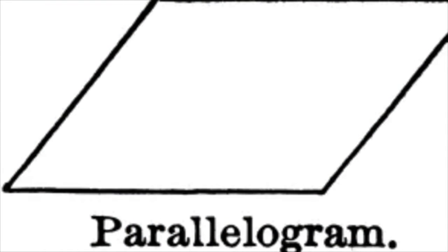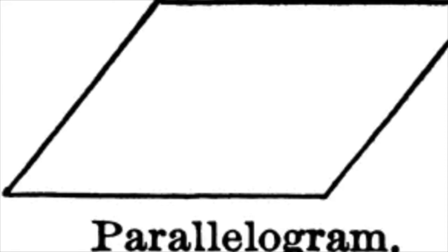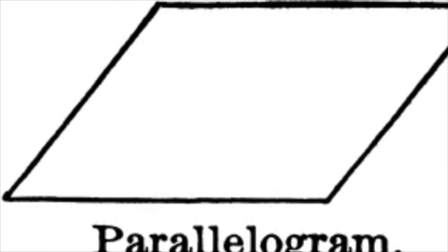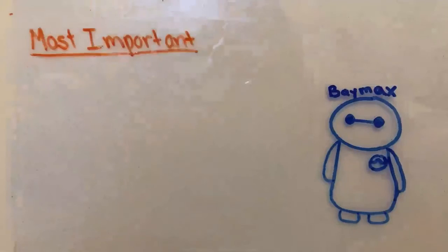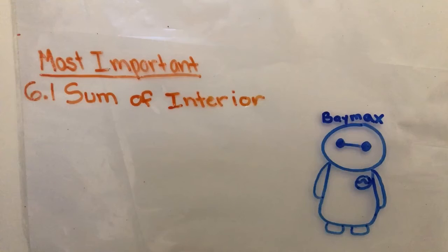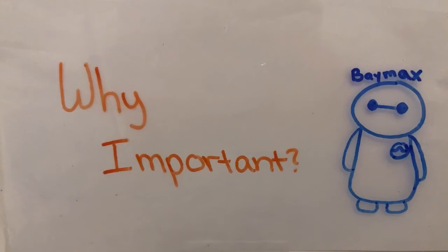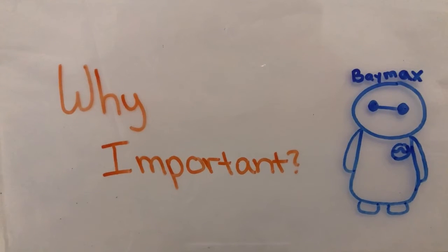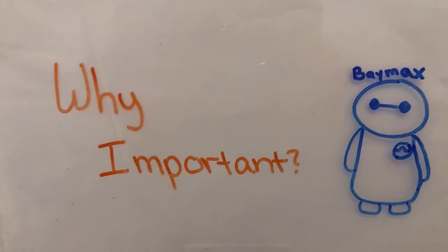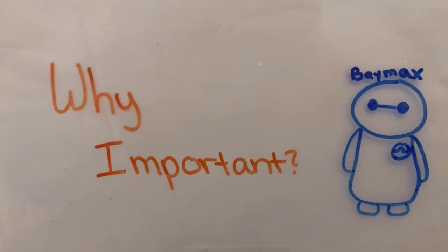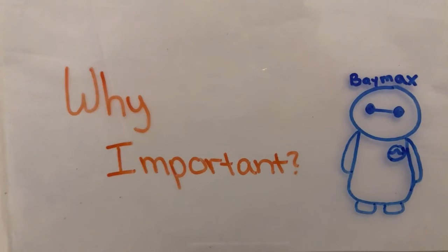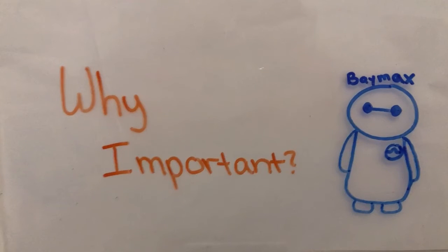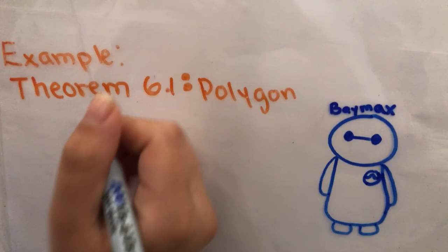We chose the properties of a parallelogram because it recognizes the properties a quadrilateral requires to be a parallelogram, which is very important in later sections of the chapter. The most important topic we chose was 6.1, sum of interior and exterior angle sums. We believe this concept is the most important because in future chapters, you will need to figure out the measurements of certain angles in polygons, and having the sum of the angle measurements is very important in this process. You will need to know Theorem 6.1, polygon interior angle sum.